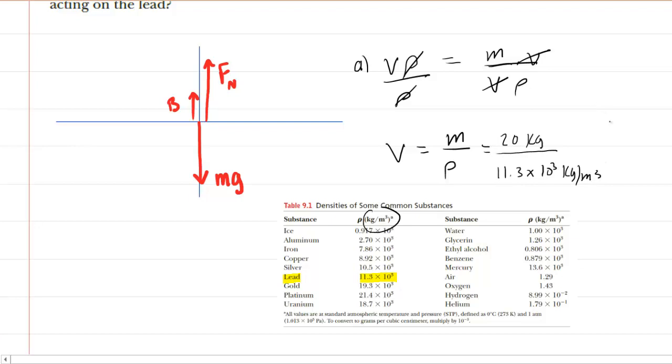So we'll go ahead and divide this, and when we do so, we're going to get 0.00177. And we can see that the kilograms will cancel. That will leave us with a unit of meters cubed. So this would be the correct answer to part A of the question.